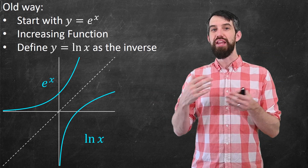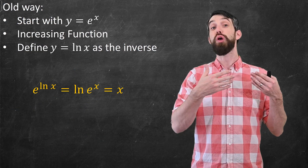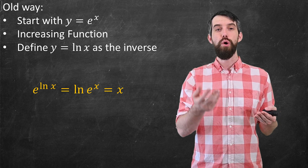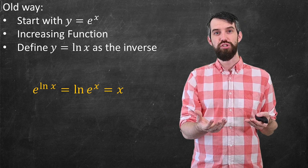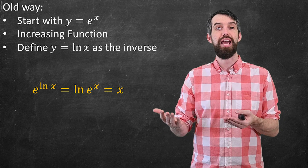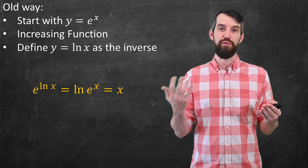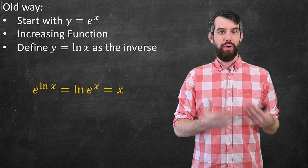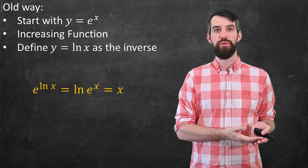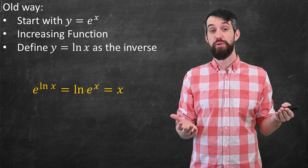So this approach effectively takes the exponential function as the thing we understand, then defines the logarithm from that. This point about inverses can be stated differently: the composition of the exponential with the logarithm, or the logarithm composed with the exponential, either way you compose these functions, you just get x — the identity function. That was the old way of defining the logarithm.